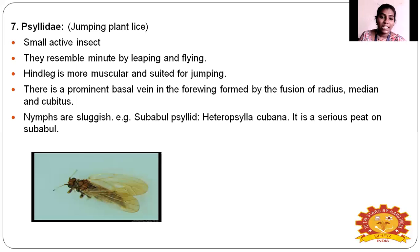Psyllidae — the jumping plant louse. They are very small and resemble a minute housefly, leaping and flying with muscular hind wings suited for jumping. The nymph of the jumping plant louse is sluggish. Example: subabul psyllid, Heteropsylla cubana — a very serious pest on subabul plants.